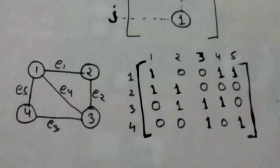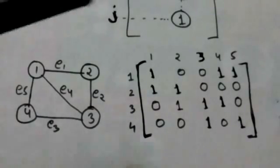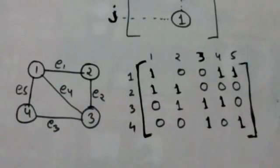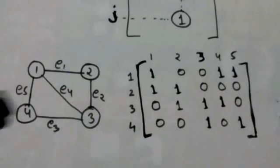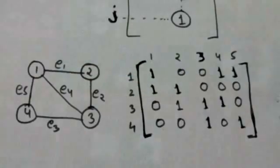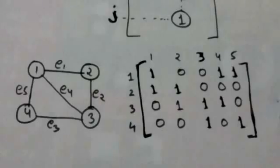Therefore, in the incidence matrix, the entry at the first row and fourth column and the entry at the third row and fourth column are both one, and all other entries of the fourth column are zero.